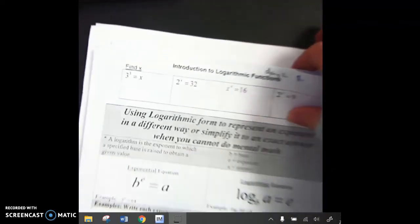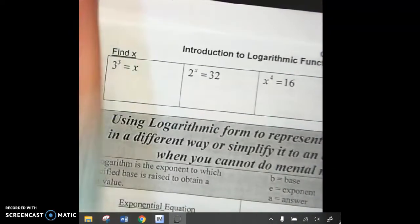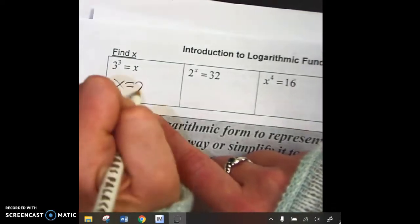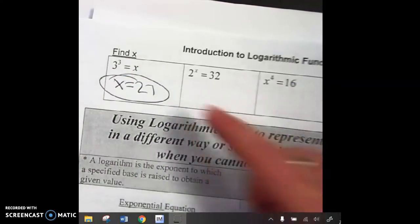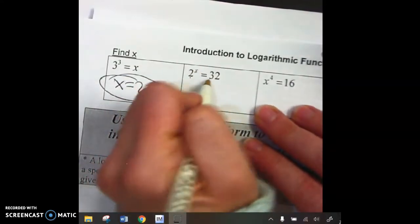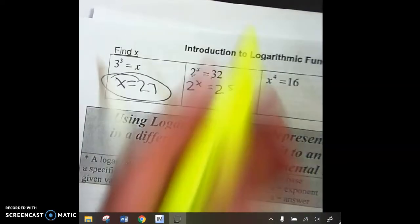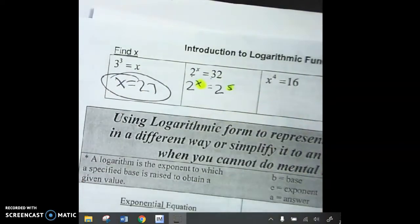Okay, so let's look here. 3 cubed means 3 times 3 times 3, which is 27. We already learned how to do that. 2 to the what equals 32, so 2 to the x. 32 is 2 to the 5th, so x equals 5. We've learned that.